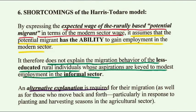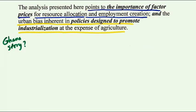Shortcomings of the Harris-Todaro model: by expressing the expected wage of the rurally-based potential migrant in terms of the modern sector wage, it assumes that the potential migrant has the ability to gain employment in the modern sector. In practice, those who migrate are those who have the skills and those who want to get the skills, which ends up causing more people to migrate to the urban area, worsening urban unemployment. The analysis points to the importance of factor prices for resource allocation and employment creation, and the urban bias inherent in policies designed to promote industrialization at the expense of agriculture.